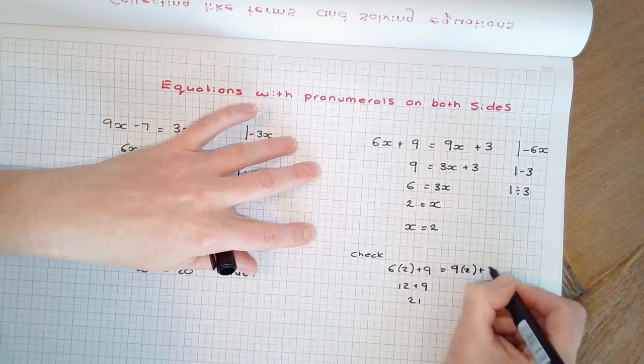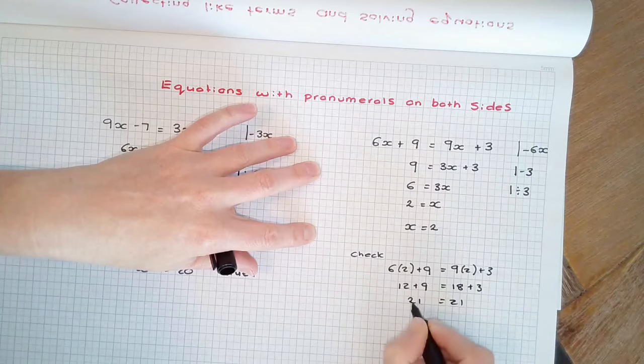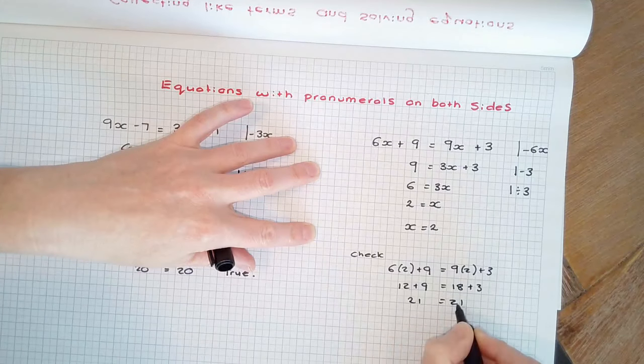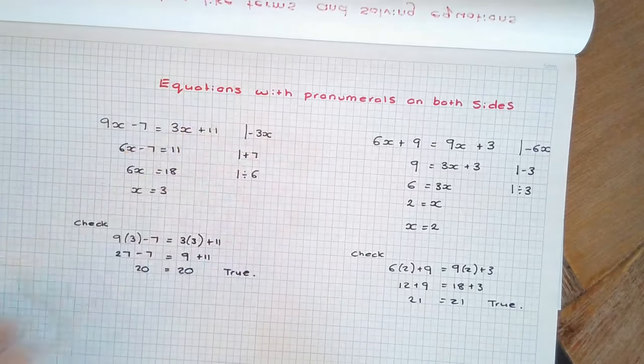9 times 2 plus 3, which is 18 plus 3, which equals also 21. Since the left-hand side equals the right-hand side, our solution is true.